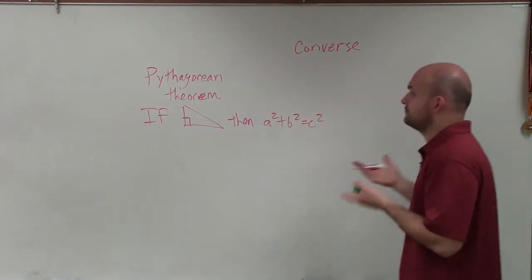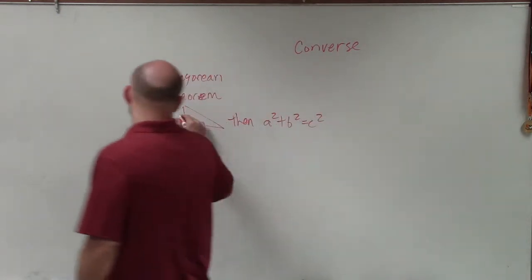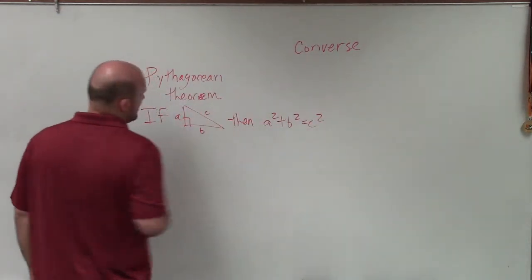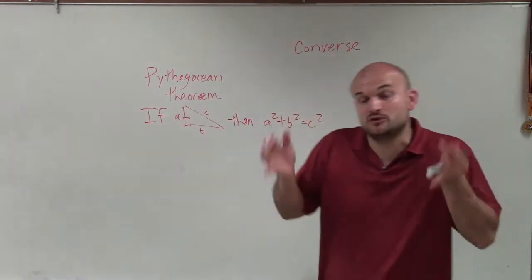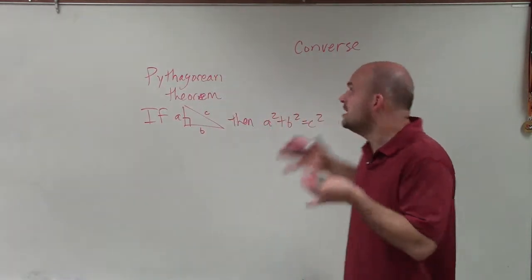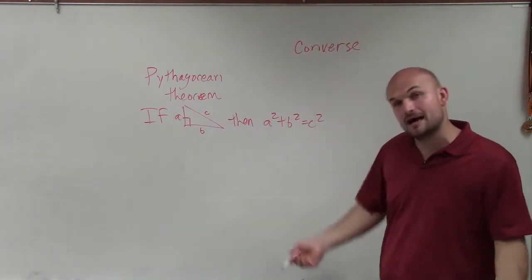Now obviously, I'm just representing a random triangle with a, b, and c as the legs. But the main important thing of the Pythagorean theorem is you have to have a right triangle to use the Pythagorean theorem. When you have a right triangle, then the sum of the legs squared equals the hypotenuse squared.